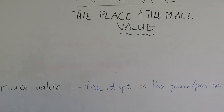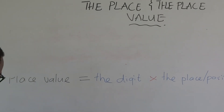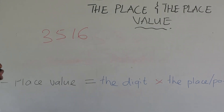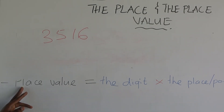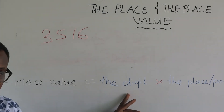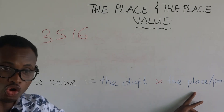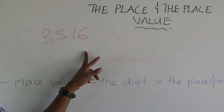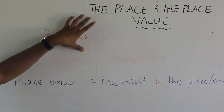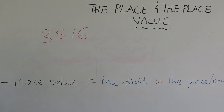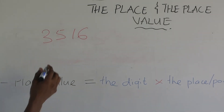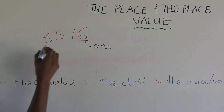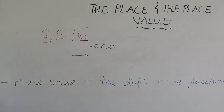I'm leaving this one here as our reference point. Let's assume we have the number 3516. To identify the place value, you need to multiply the digit by the place or the position. You already know the position of each digit. The position of 6 is ones, and the place of 1 is tens.